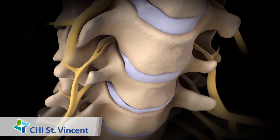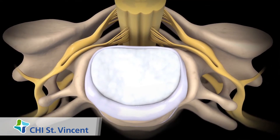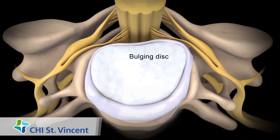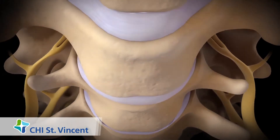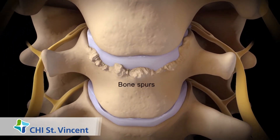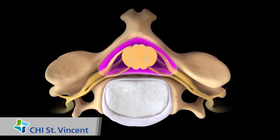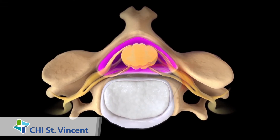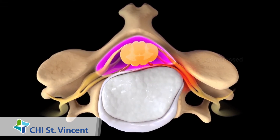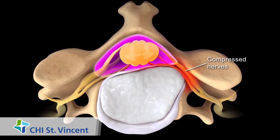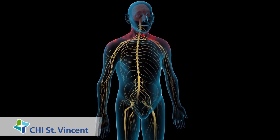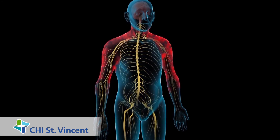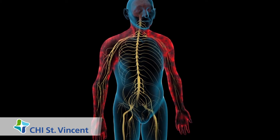Over time, your cervical spine may develop problems, such as a bulging disc, a herniated or ruptured disc, or bony growths on your vertebrae called bone spurs. These changes can narrow your vertebral canal and put pressure on your spinal cord or the nerves that branch off of it. The pressure can cause neck pain and stiffness, or pain, numbness, and weakness in your arms or hands.